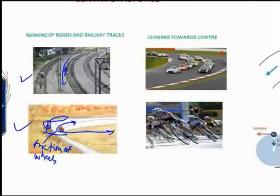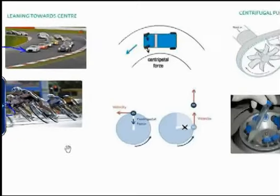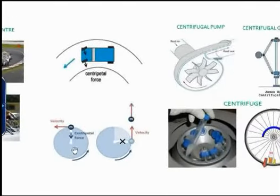Similarly, in case of railway tracks, the outer rail on a curve is raised a little higher than the inner one, preventing wear and tear of the wheels and the chances of the train going off the track. A cyclist also leans towards the curve to maintain the necessary centripetal force — a similar example is seen in racing cars.